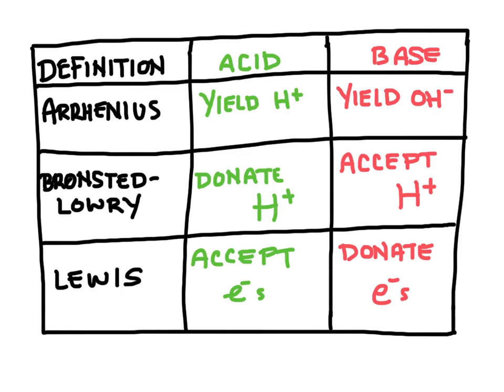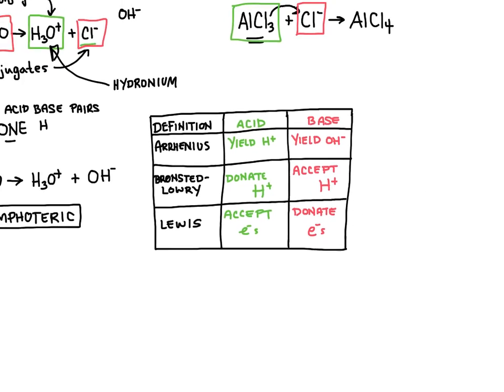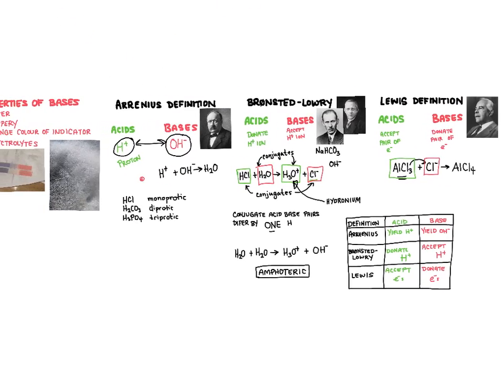Okay, let's recap really quick. The Arrhenius definition says that acids yield H+ ions, or hydrogen ions, and bases yield hydroxide ions. Bronsted-Lowry says that acids will donate a hydrogen ion, whereas bases will accept that hydrogen ion. And finally, Lewis said that acids are compounds that will accept a pair of electrons, whereas bases are able to donate a pair of electrons. And those are acids and bases.